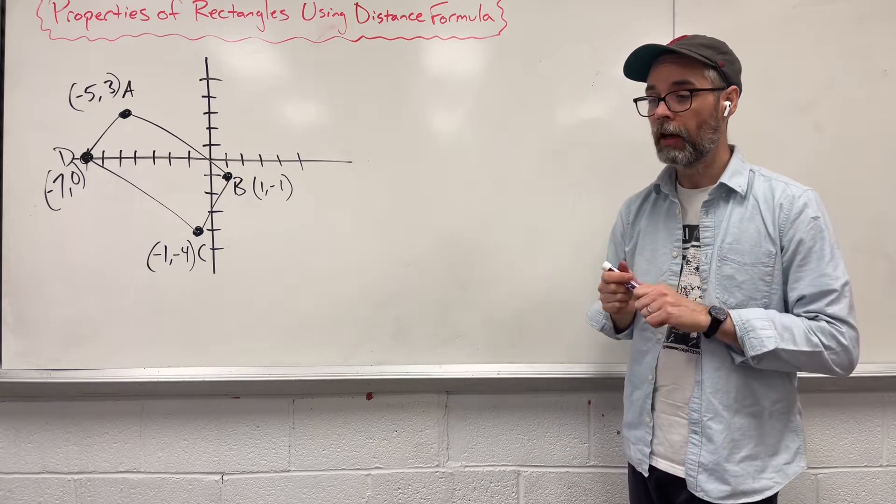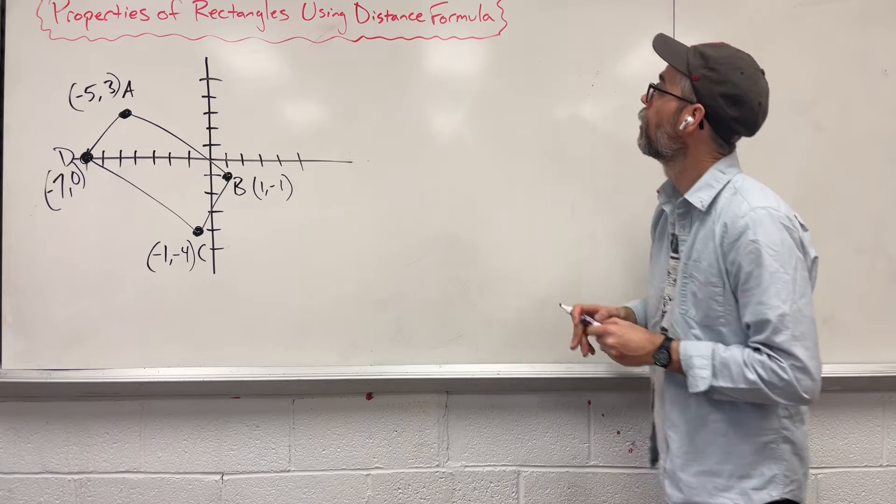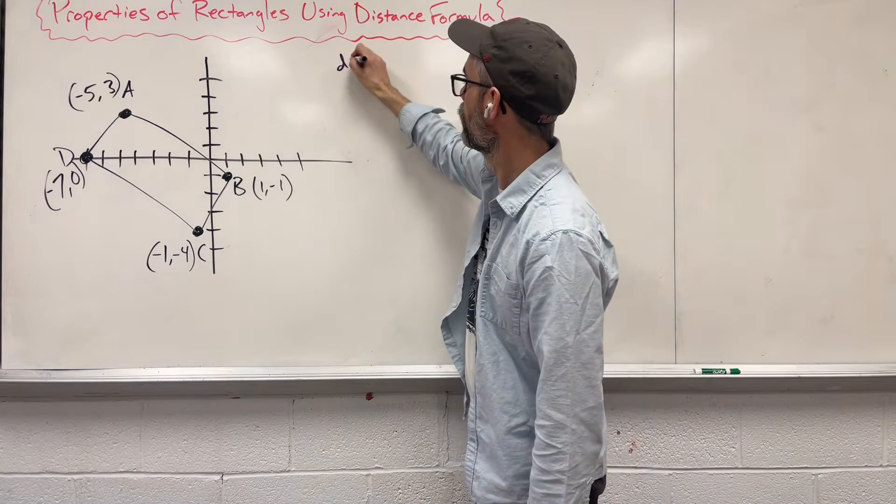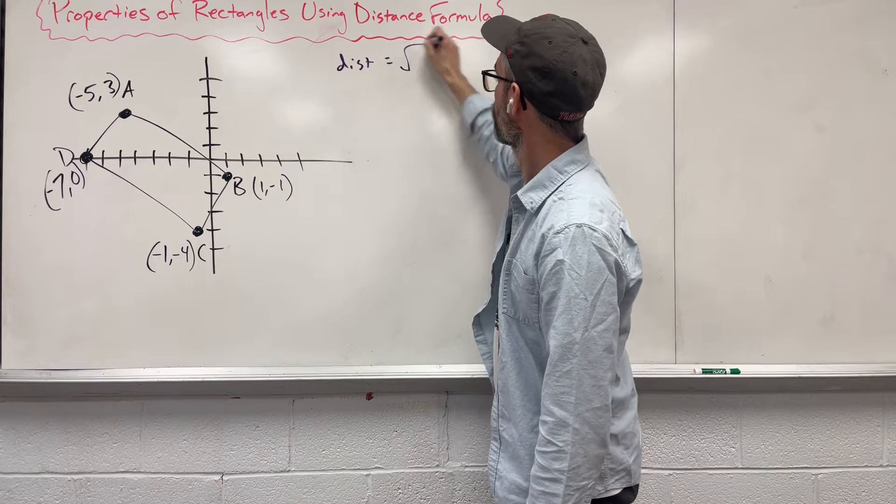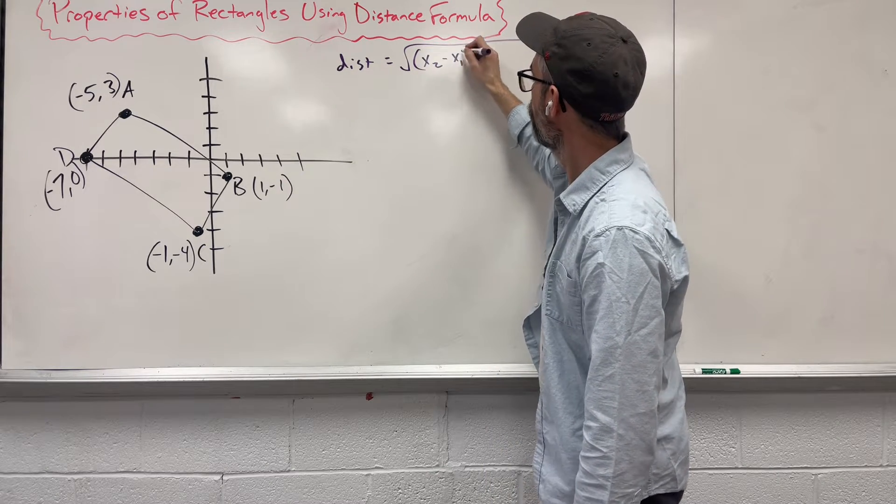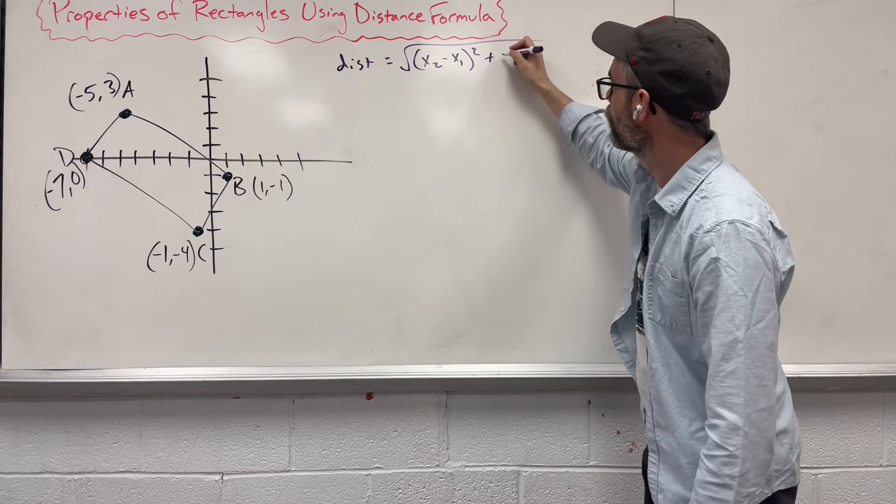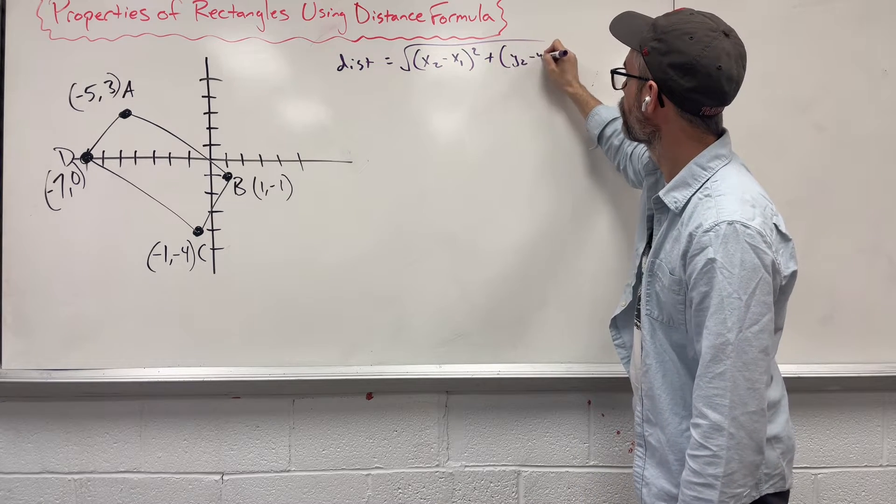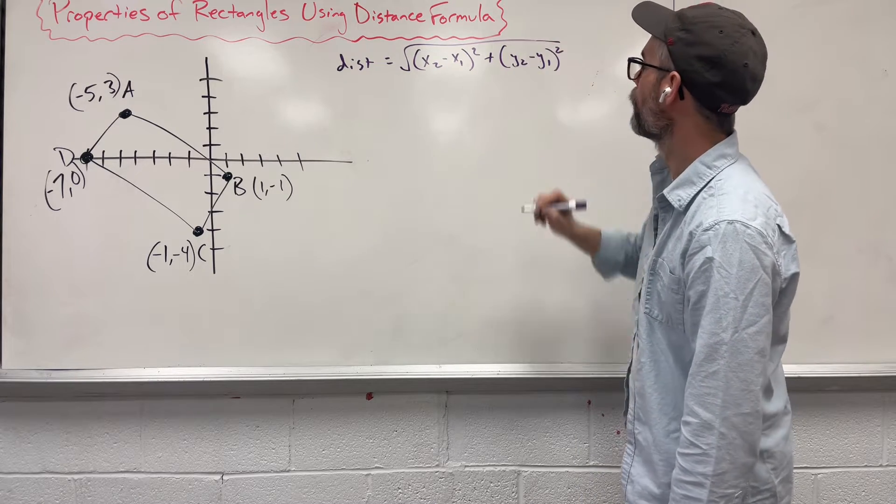So let's start finding our distances. Well first off distance formula, what do we got going on there? It's going to be the square root, we're going to say x2 minus x1, square it, plus y2 minus y1 and square it.